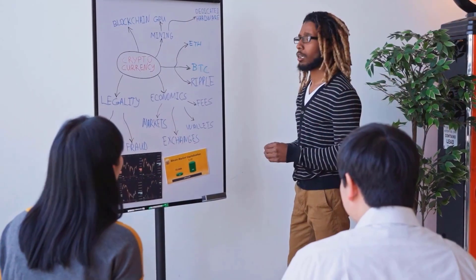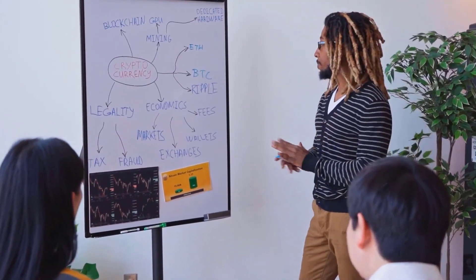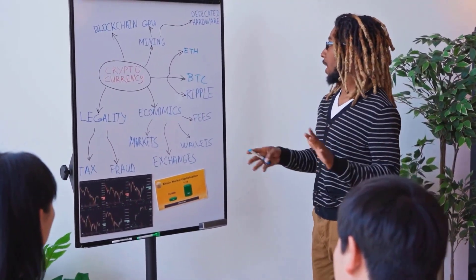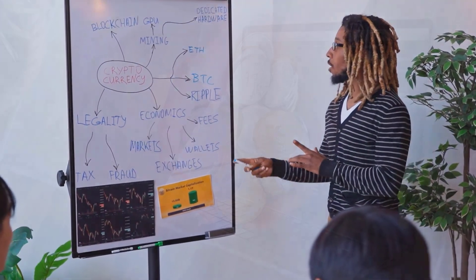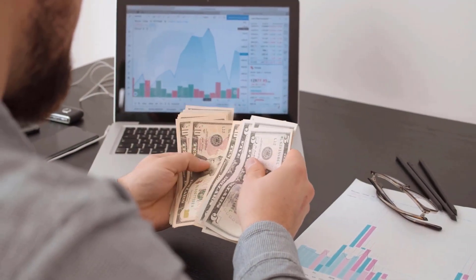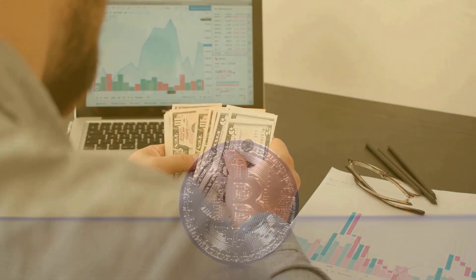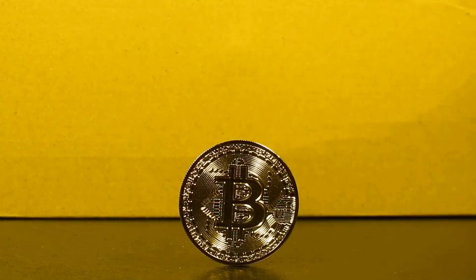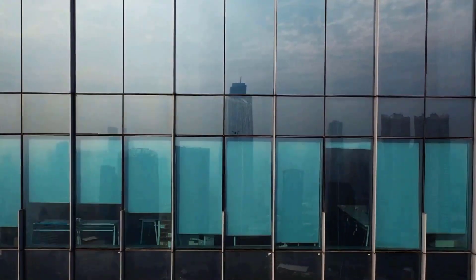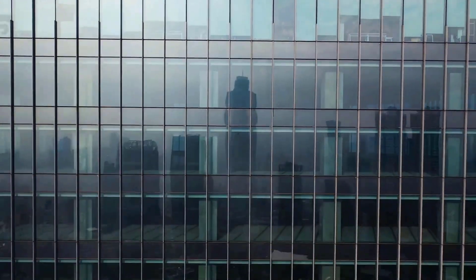Algo to United States dollars expectations for November 2023. At the outset cost at $0.092. Most extreme cost $0.105, leased cost $0.082. The normal for the month $0.092. Algorand cost estimate toward the month's end $0.088, change for November 4.3%.